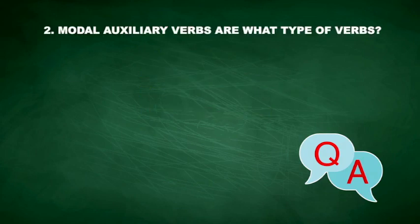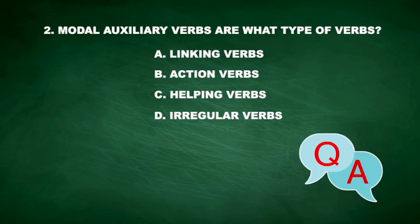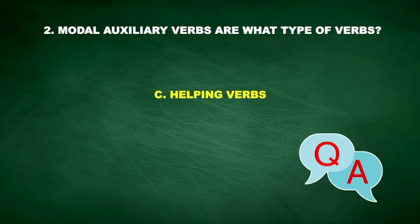Question 2: Modal auxiliary verbs are what type of verbs? A. Linking verbs. B. Action verbs. C. Helping verbs. D. Irregular verbs. The correct answer is C. Modal auxiliary verbs are helping verbs.